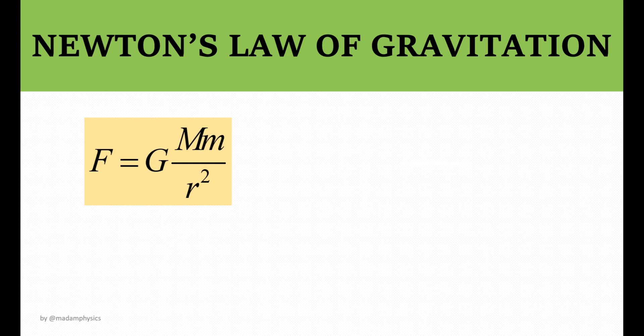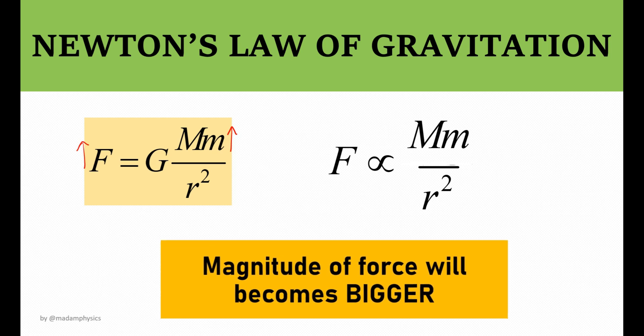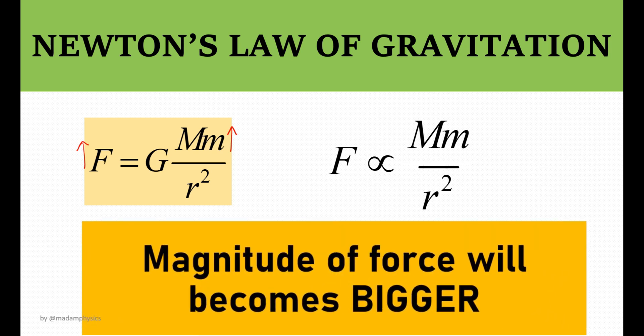Since we already know the mathematical relation in Newton's Law of Gravitation, what would happen to the magnitude of force if one of the objects increases its mass? Or maybe the distance between the two objects is changing. Will it affect the magnitude of force? Since force is directly proportional to the product of two masses, if any mass increases, gravitational force will have more magnitude. Hence, the magnitude of force will become bigger.